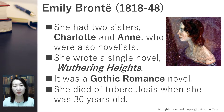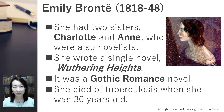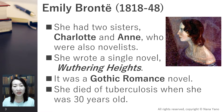Emily refuses to reveal her identity to the public until the end, so she published Wuthering Heights anonymously under the name Ellis Bell. The novel was Gothic Romance, which was a minor genre at the time. Emily caught a cold at her brother's funeral, which led to her contracting tuberculosis, and she died at the age of 30.